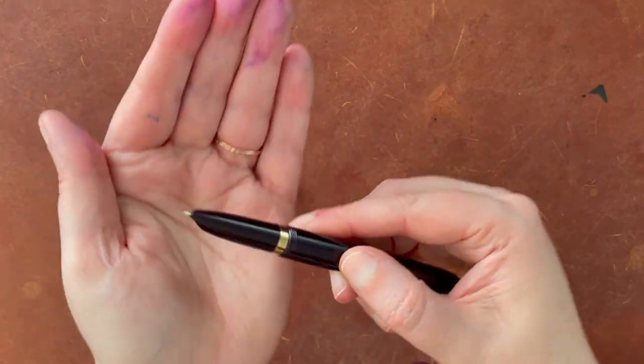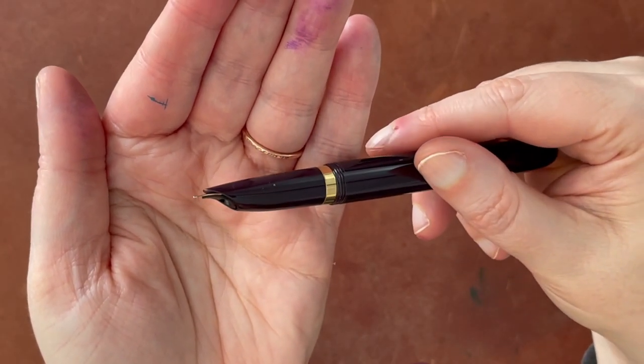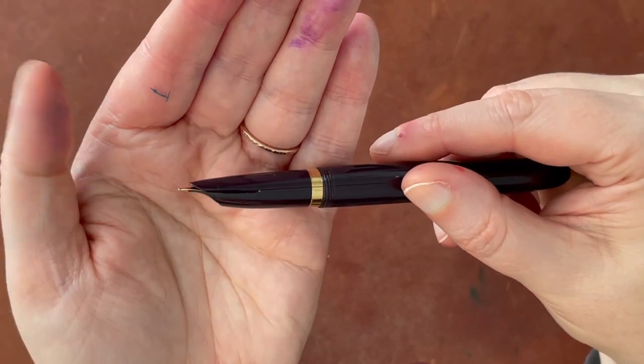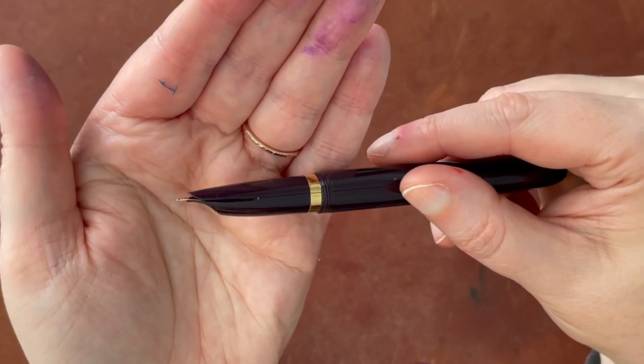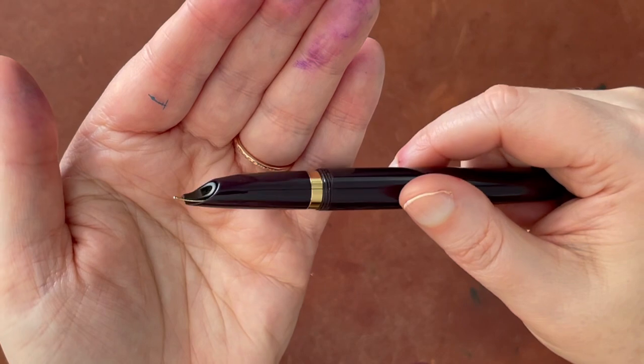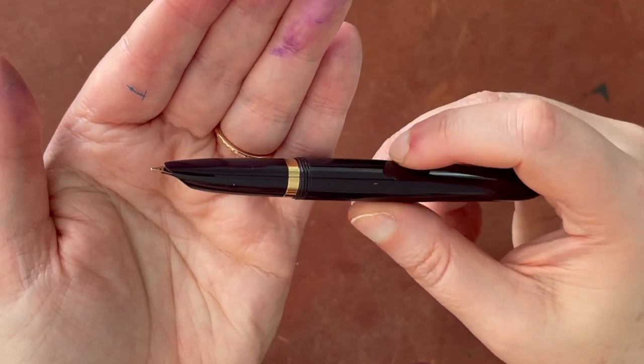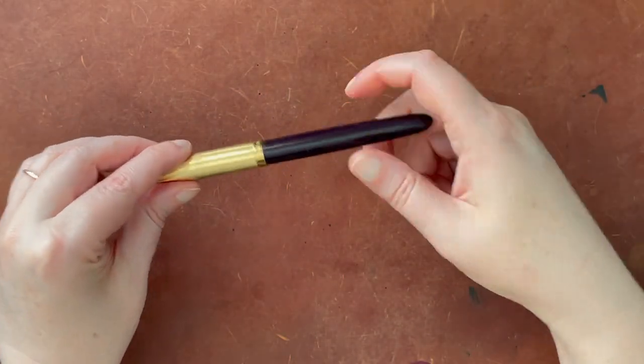So I already showed you the converter inside of here, and then it has this hooded nib which is kind of unique to the original Parker 51. But the hood I think goes up a little bit higher on this one, it's like lifted up above the nib, which seemed a little strange to me. Here I'll show you this one and then I'll open up the vintage one and show you that as well.